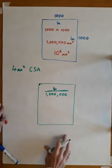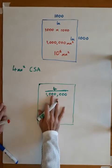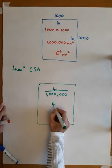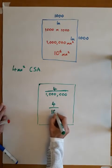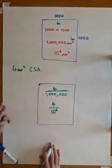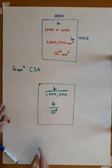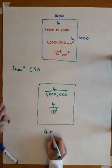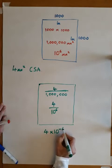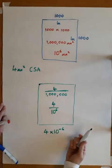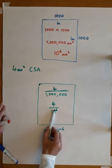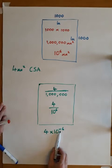So if we apply the rules of standard form to this, that's the same as four divided by ten to the six. Or better still, we could write it as four times ten to the minus six. If you remember from the laws of indices, the minus means one over.